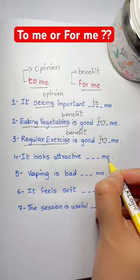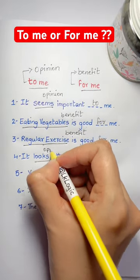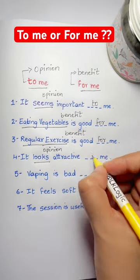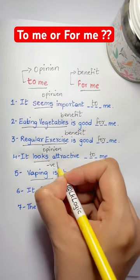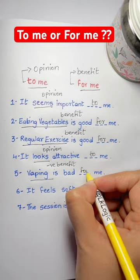It looks attractive blank me. 'Looks' - that's your opinion, so it looks attractive to me. Vaping is bad blank me. Vaping is a negative benefit, so it's 'for.' Vaping is bad for me.